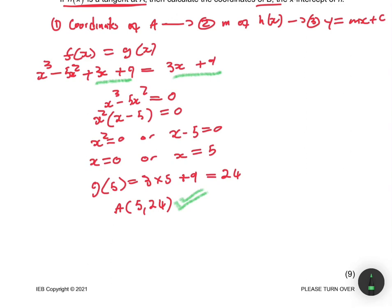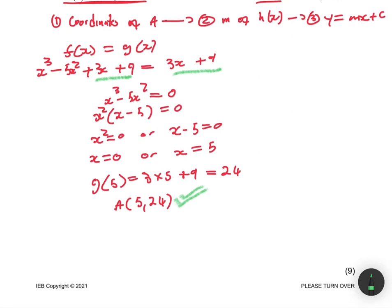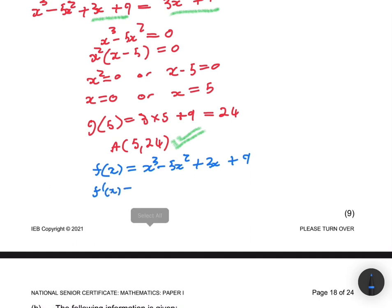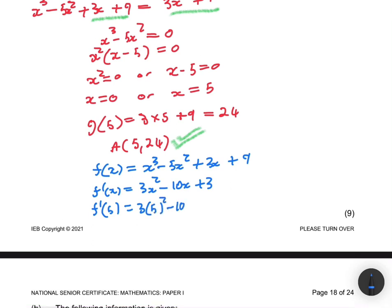From the coordinates of A, we find the gradient at that point by differentiating f(x). Since h(x) is the tangent to f(x), the gradient of h(x) equals f'(x) at A. f(x) = x³ - 5x² + 3x + 9, so applying the power rule: f'(x) = 3x² - 10x + 3. We substitute the x-coordinate of A: f'(5) = 3(5²) - 10(5) + 3.